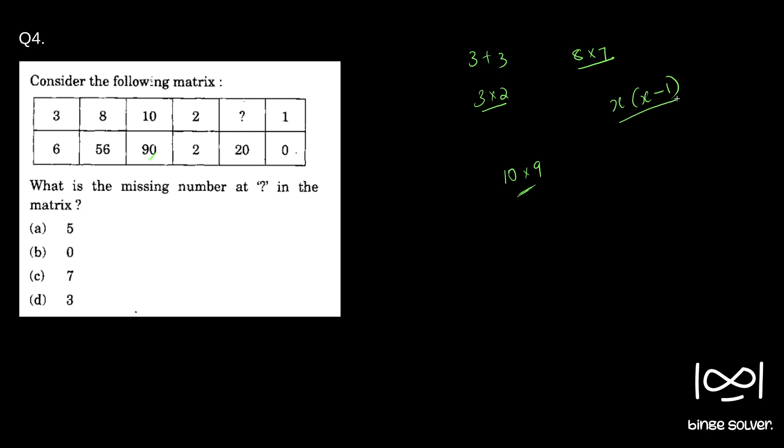So that x into x minus 1 relationship holds true for other elements. So to find the answer, x into x minus 1 has to be 20. So it is 5.